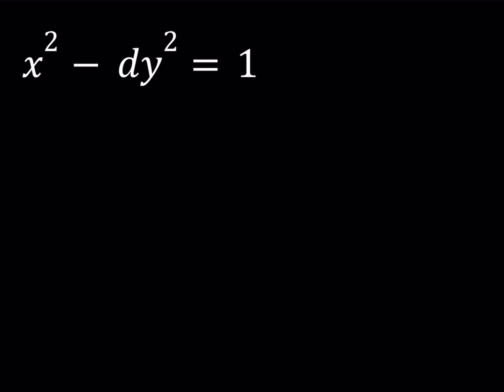So this is Pell's equation: x squared minus dy squared is equal to 1, where d is an integer that is not a perfect square — you can also call that a square-free integer. So if d is equal to 4, then we don't get a Pell's equation because that is going to be factorable, and we can talk about the solution in a different way.